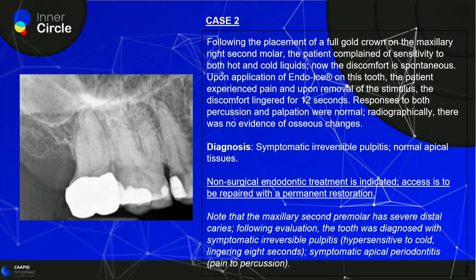Coming to case two. Following the placement of a full gold crown on the maxillary right second molar — we know it's a full gold crown because it is very radiopaque, unlike PFMs or all-ceramic crowns — the patient complains of sensitivity to both hot and cold liquids. The discomfort is spontaneous, which rules out reversible pulpitis. Upon application of endo-ice on this tooth, the patient experiences pain, and upon removal of the stimulus, the discomfort lingered for 12 seconds.